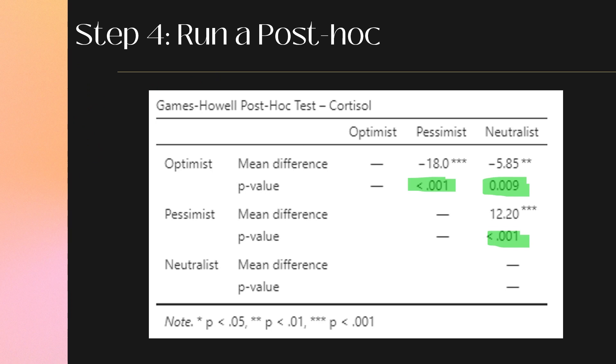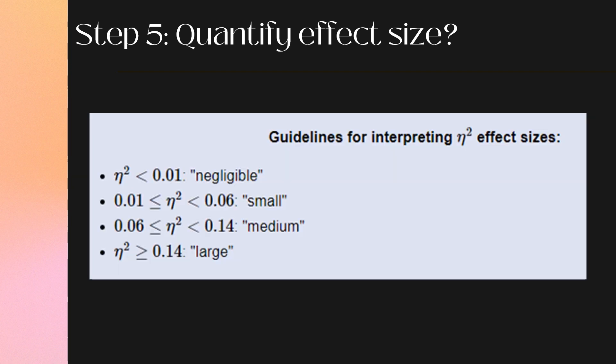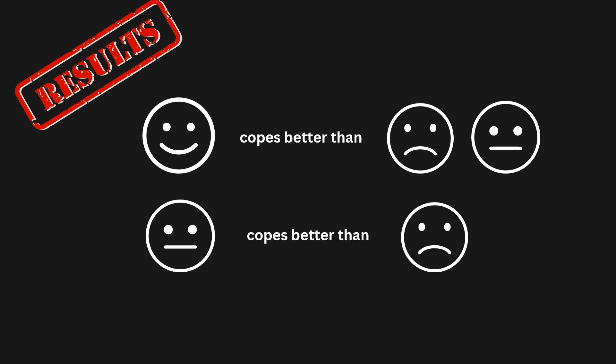We can also turn on effect size. How big of an impact does having a positive mindset actually have? Our eta squared is 0.650 — referring back to our table, we see that this is a large effect size. In this case, there is significant difference between all of our groups. We'd want to report that being optimistic is significantly better than being a neutralist or a pessimist in stressful situations. We can also say that being a neutralist is better than being a pessimist. So, always look on the bright side — or at least on the neutral side.